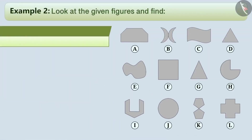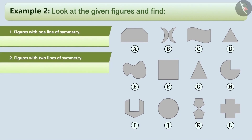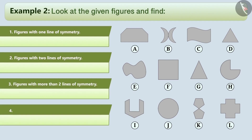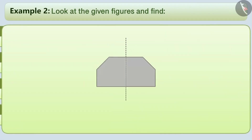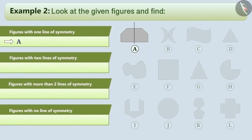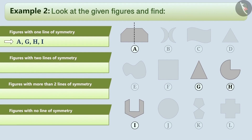Next example: look at the given figures and find figures with one line of symmetry, two lines of symmetry, more than two lines of symmetry, and no line of symmetry. If we talk about figure A, by folding it vertically, the two halves cover each other completely. It can be seen that this doesn't happen by folding the figure through any other line. Hence, figure A has just one line of symmetry. Similarly, figures G, H and I have only one line of symmetry.